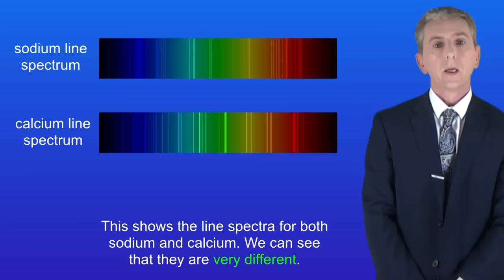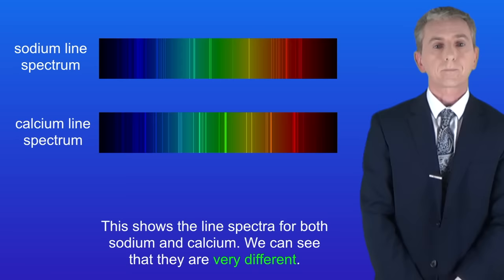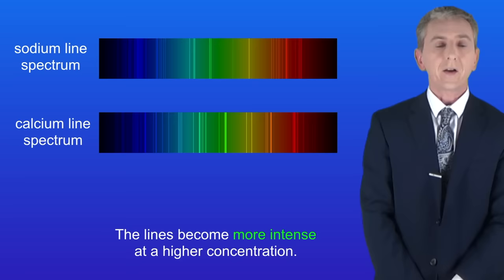So I'm showing you here the line spectra for both sodium and calcium and we can see that they're very different. Flame emission spectroscopy can also tell us the concentration of the metal ion and that's because the lines become more intense at a higher concentration.